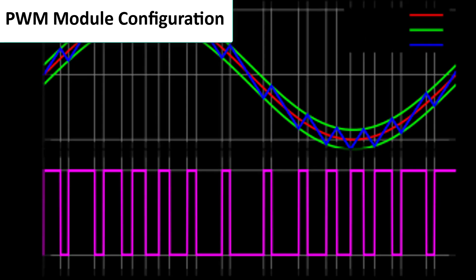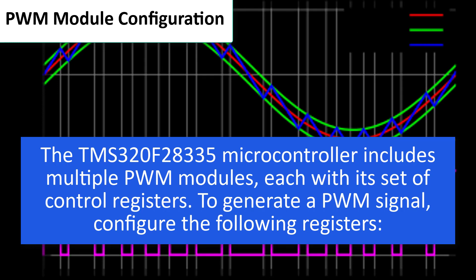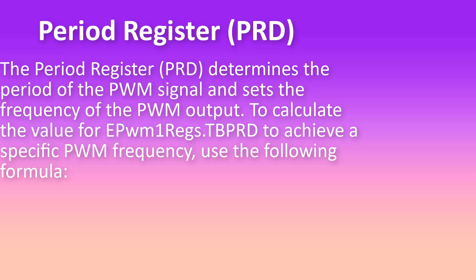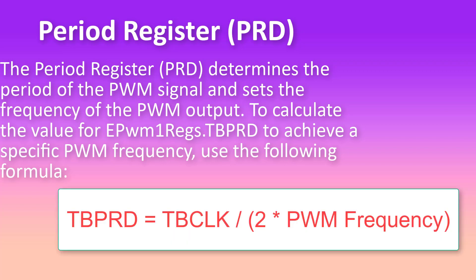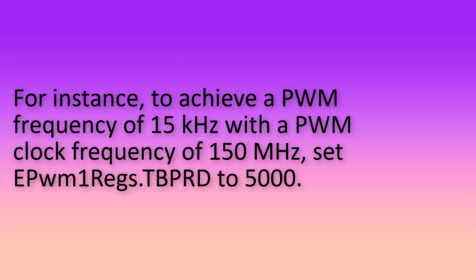PWM Module Configuration. The TMS-320F28335 Microcontroller includes multiple PWM modules, each with its set of control registers. To generate a PWM signal, configure the following registers. Period Register (PRD): The Period Register determines the period of the PWM signal and sets the frequency of the PWM output. To calculate the value for EPWM1regs.TBPRD to achieve a specific PWM frequency, use the formula: TBPRD = TBCLK / (2 * PWM frequency). For instance, to achieve a PWM frequency of 15 kHz with a PWM clock frequency of 150 MHz, set EPWM1regs.TBPRD to 5000.